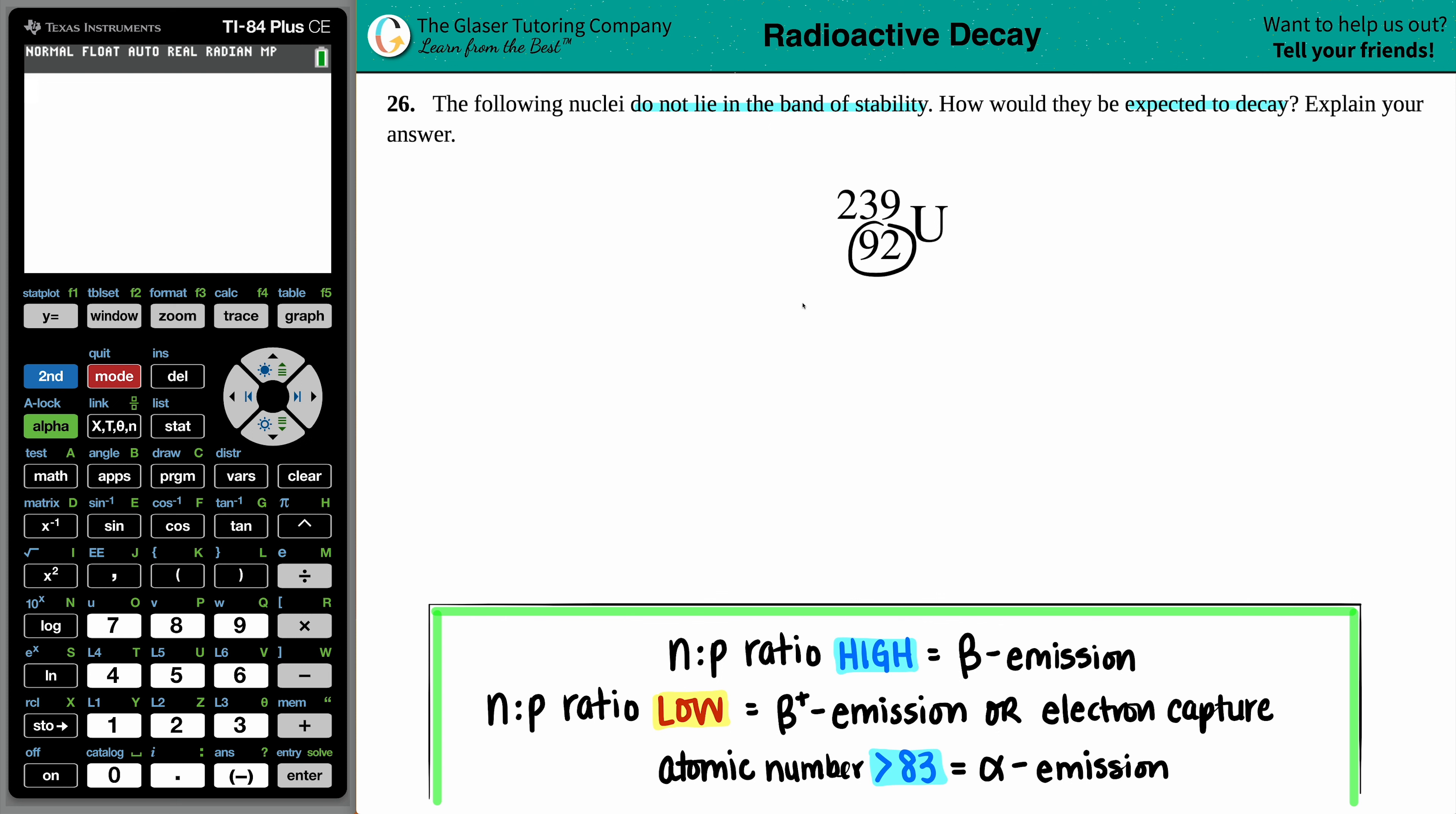Which is always uranium's atomic number - that's the number of protons. Now looking at this nuclide, we should be able to know what type of decay this is going to undergo, whether it's going to be beta emission, positron emission, or electron capture. These are not the same, by the way - these are two different methods of decaying. Or it could be undergoing alpha emission.